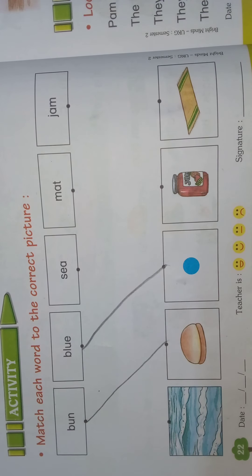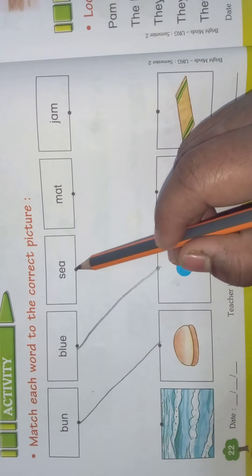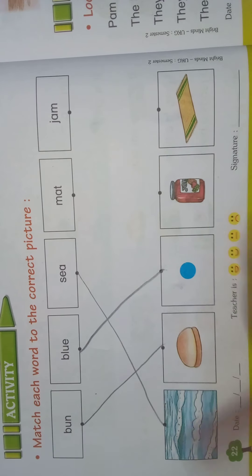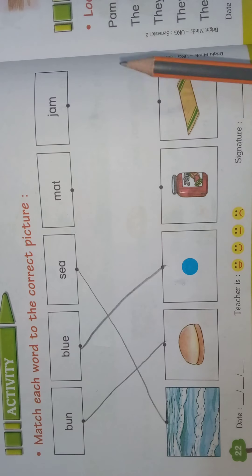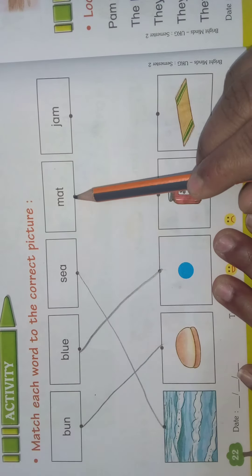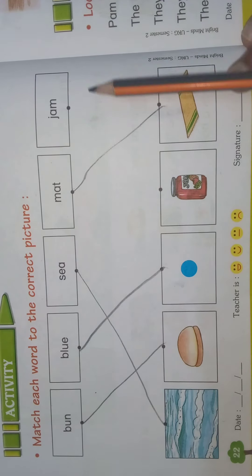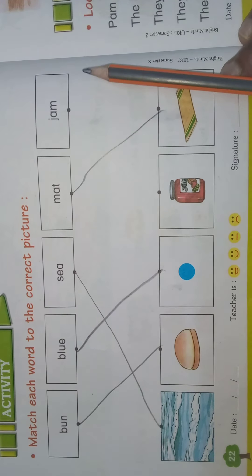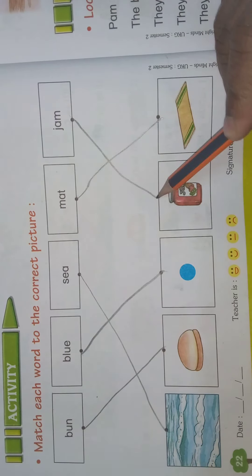Next, S-E-A, sea — where is the sea, children? Yes, here it is. We will match it. Next, M-A-T mat — where is the mat, children? Yes, here it is, M-A-T mat. Next, J-A-M jam — yes, here it is, J-A-M jam.